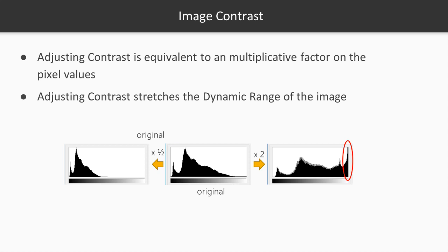In the middle we have the histogram of our original panda image. Increasing the contrast by 2 — that is, multiplying the pixel values by 2 — stretches the histogram towards the right, as seen on the right. Decreasing the contrast by 2 — that is, multiplying the pixel values by one half — shrinks the histogram toward the left, as seen on the left.